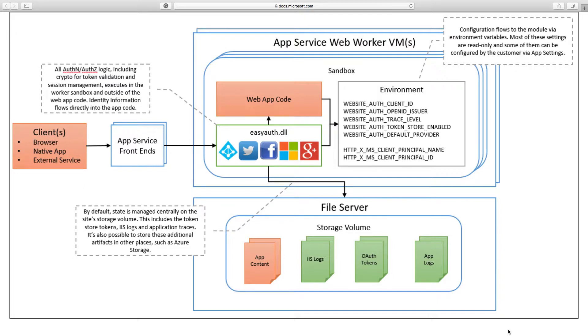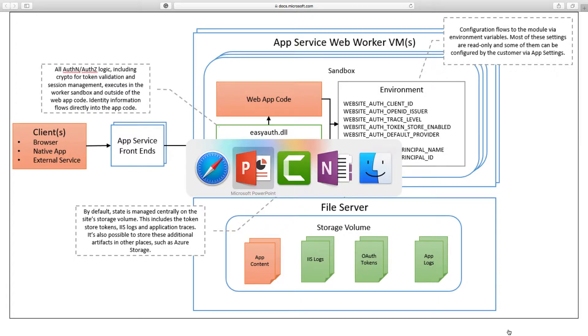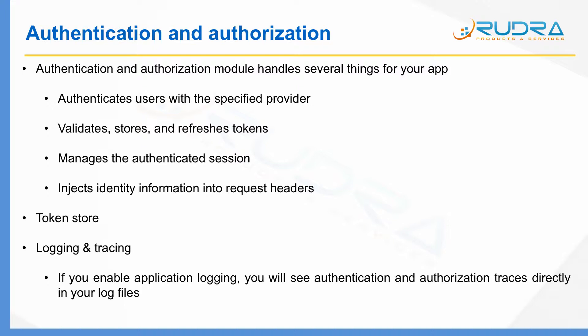I hope that diagram provides a better view of the authentication and authorization feature associated with App Service. In terms of logging and tracing, if you enable application logging, you will see authentication and authorization traces directly in your log files. You can also use one of the environment variables to define the trace level.